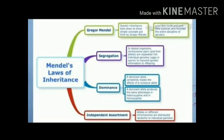The third law is Law of Independent Assortment. According to this law, alleles of different characters on different chromosomes are distributed randomly to the individual gamete. This is the third law — Law of Independent Assortment — and this law is based on the dihybrid cross.